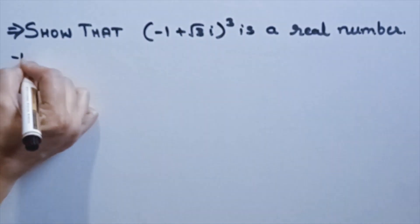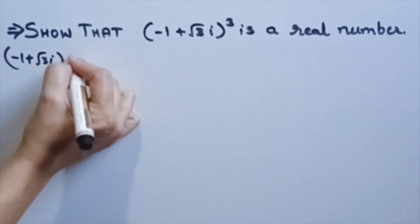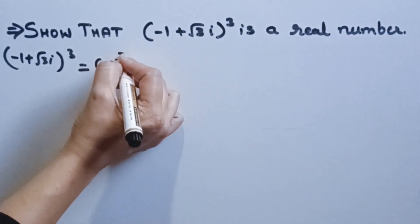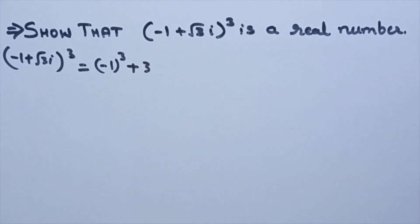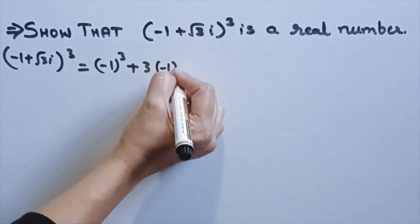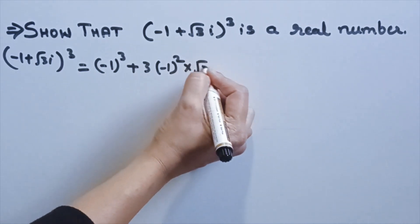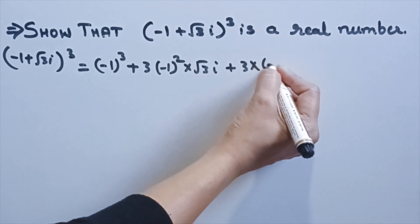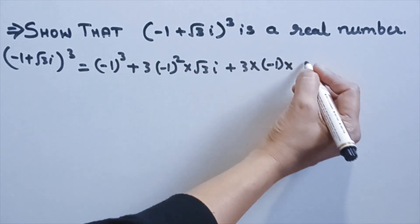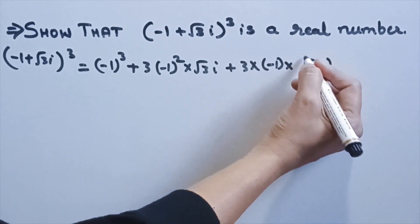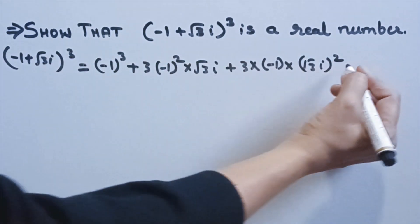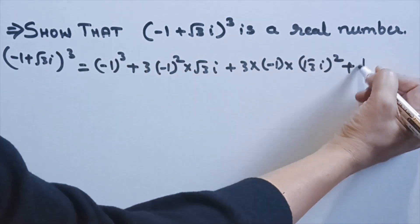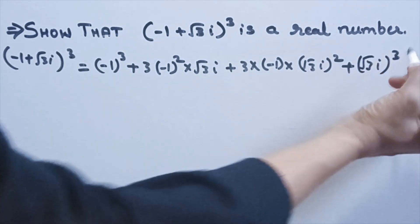So, (-1 + √3i)³ is equal to: first term cubed, plus 3 times first term squared times second term, plus 3 times first term times second term squared, plus second term cubed — that is (√3i)³.